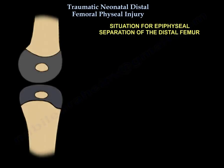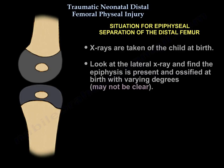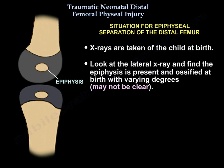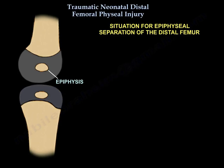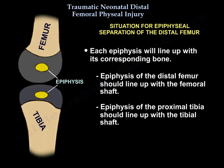Here is the situation for epiphyseal separation of the distal femur. Looking at the lateral x-ray of a child at birth, the epiphysis is ossified and present at birth with varying degrees and it may not be clear. Each epiphysis will line up with its corresponding bone — for example, the epiphysis of the distal femur will line up with the femoral shaft, and the epiphysis of the proximal tibia will line up with the tibial shaft.